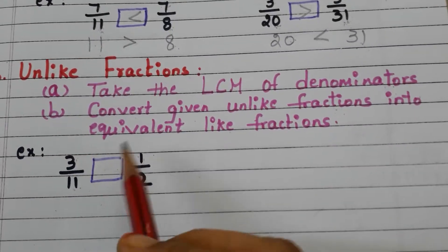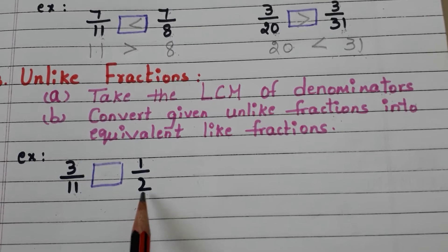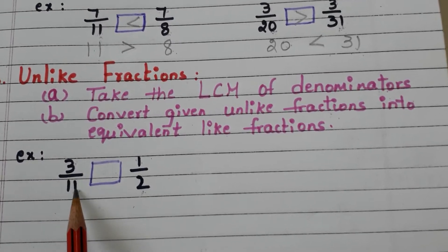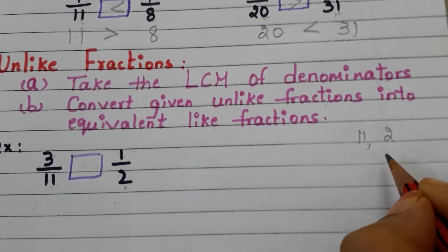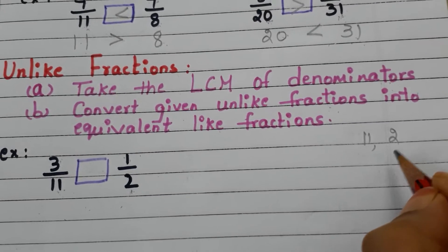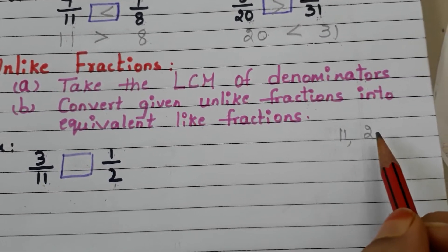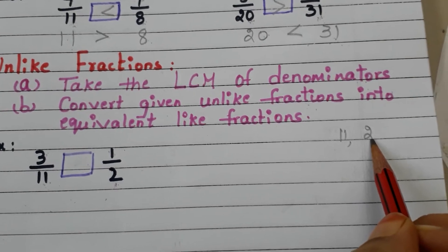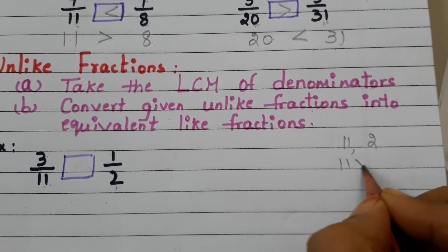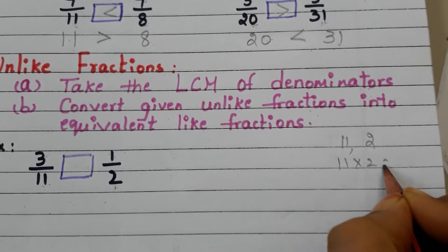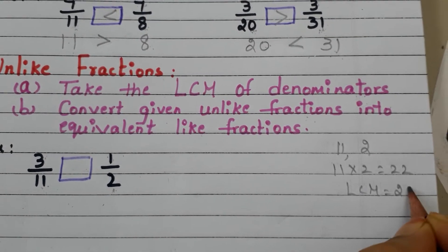Here we have 3 by 11 and 1 by 2. First we take the denominators 11 and 2 and find the LCM. There is no common factor for 11 and 2 except 1, so we can directly multiply: 11 into 2 is 22. So LCM equals 22.